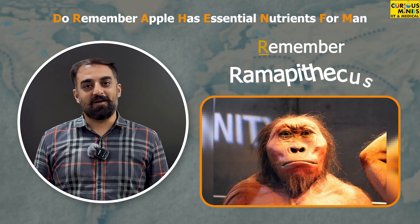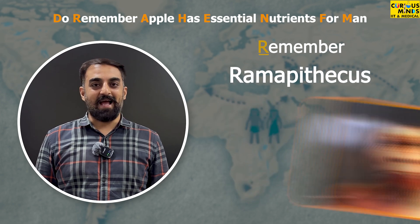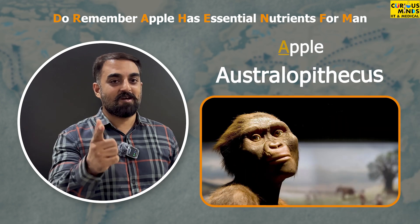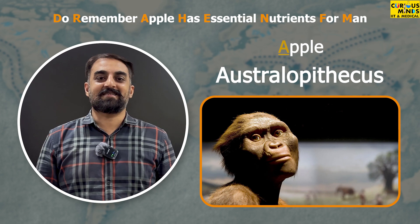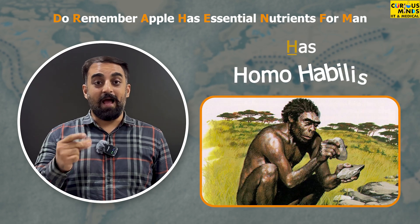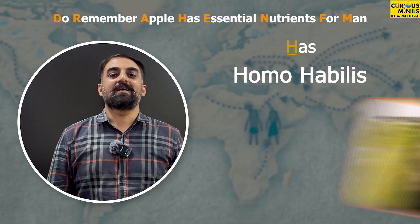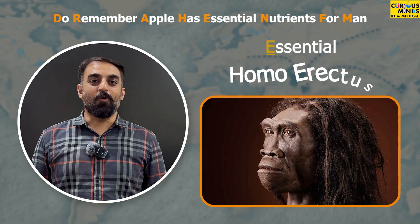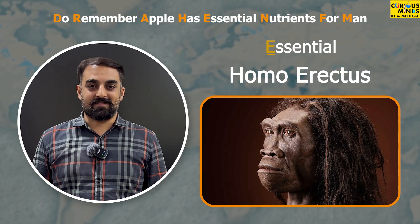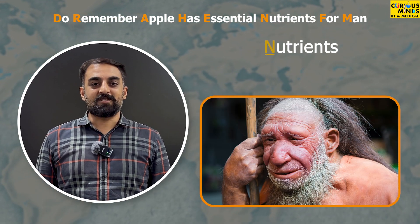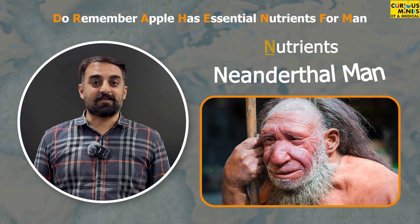Remember stands for Ramapithecus, Apple stands for Australopithecus, Has stands for Habilis, Essential stands for Homo erectus, Nutrients stands for Neanderthal.